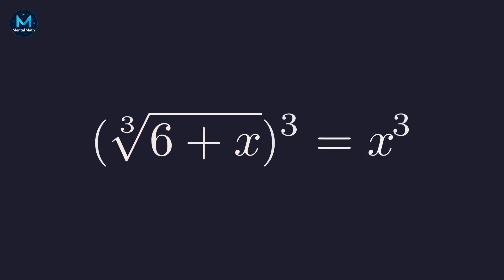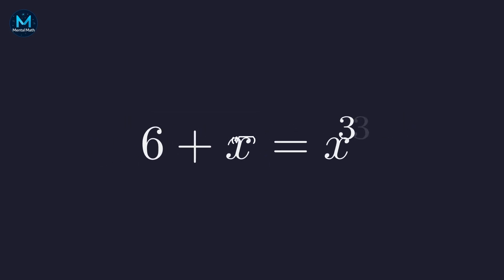We cube both sides of the equation. On the left, the cube and cube root cancel, leaving 6 plus x. On the right, we get x cubed.